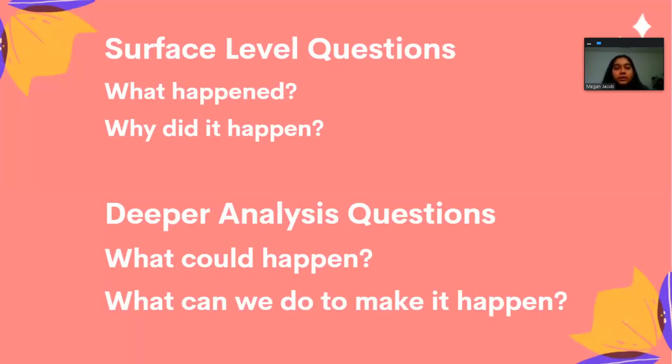So this slide focuses on a few questions that data science can be used to answer. On the surface, you can use data science to visualize or detect what happened in a certain situation and why did it happen. But then going a bit more under the surface, you can look at data science can be used in a more predictive sense to look at what could have happened in that particular scenario, or what can we do to make it happen.